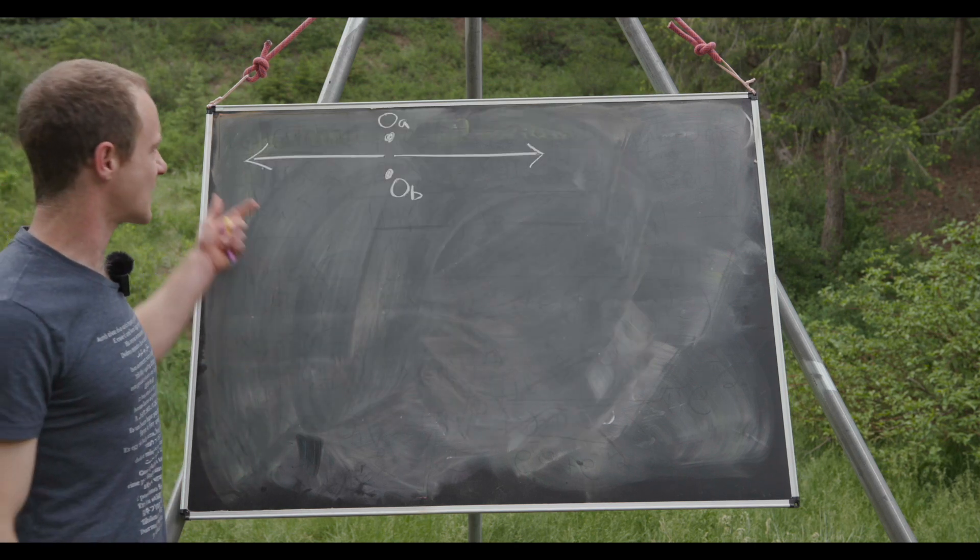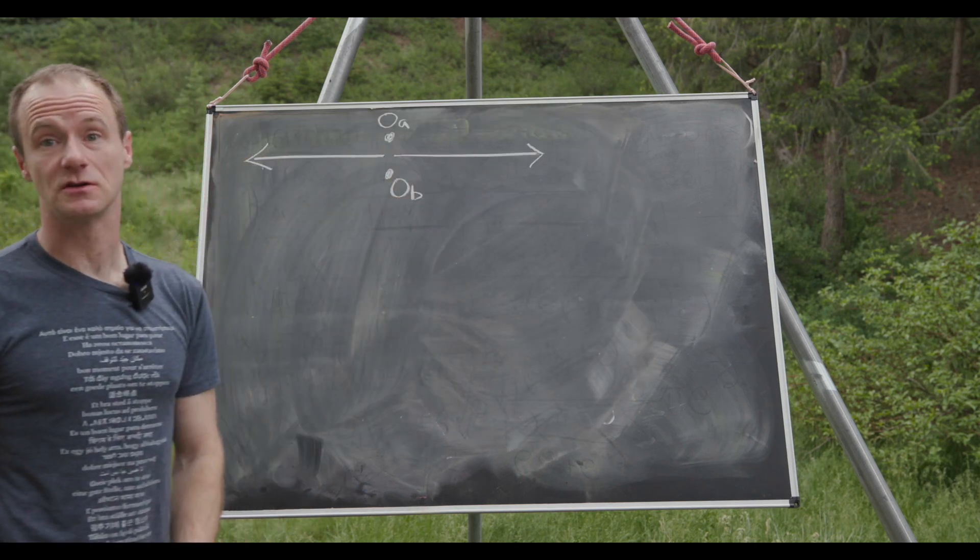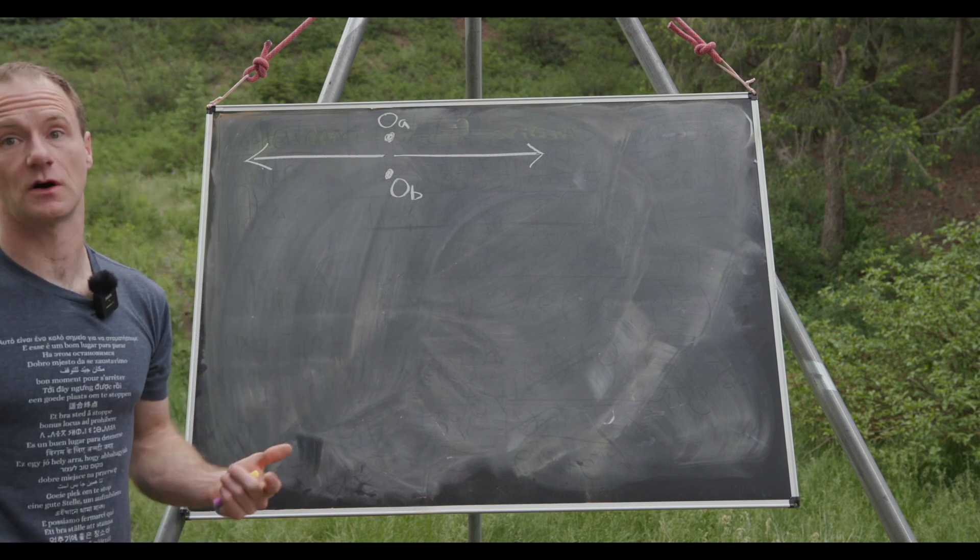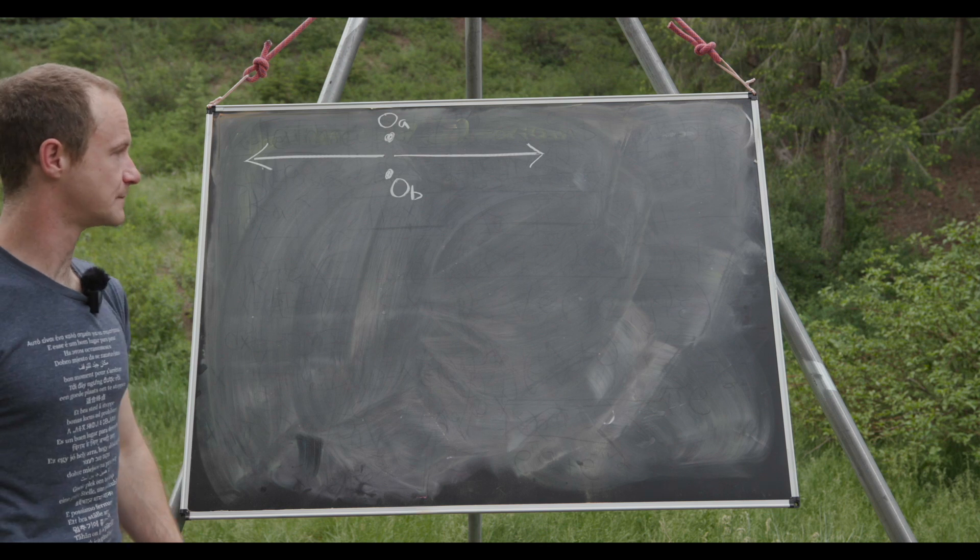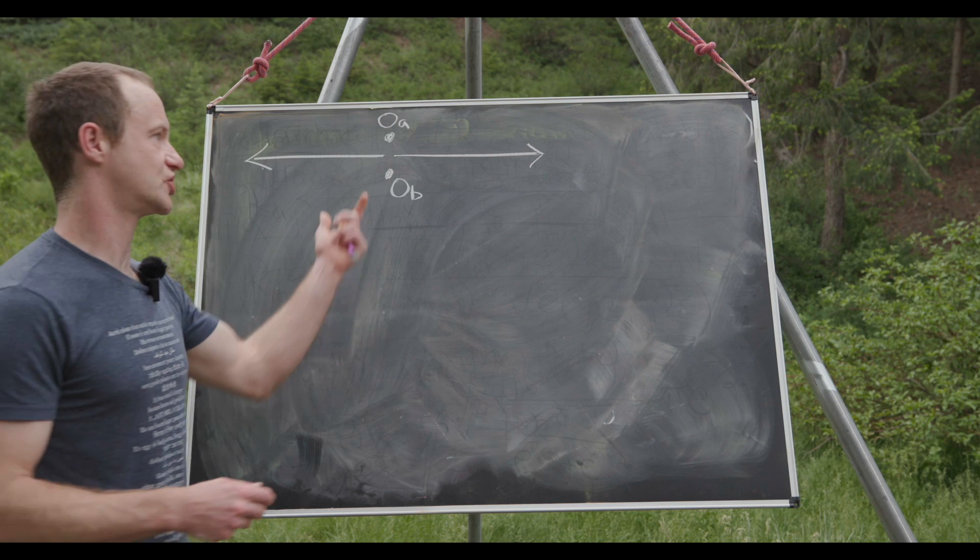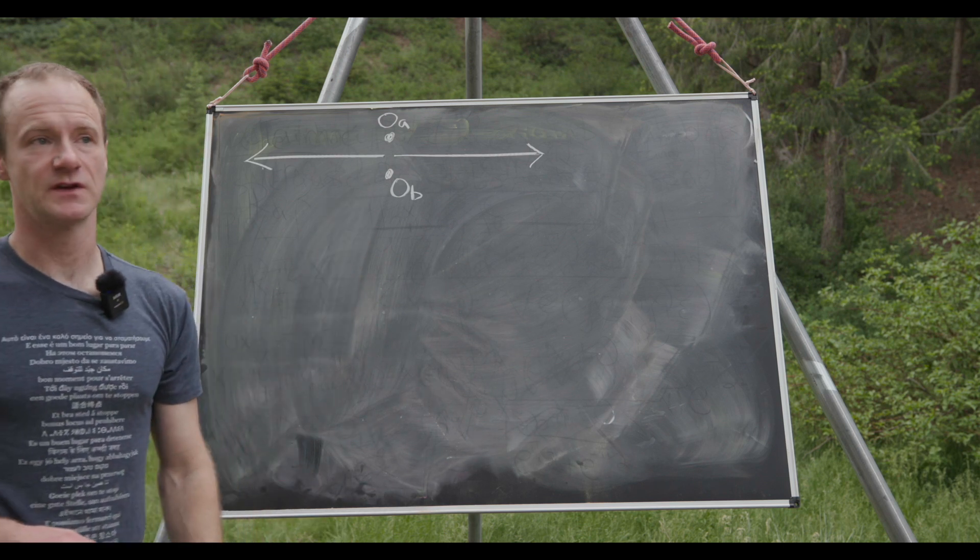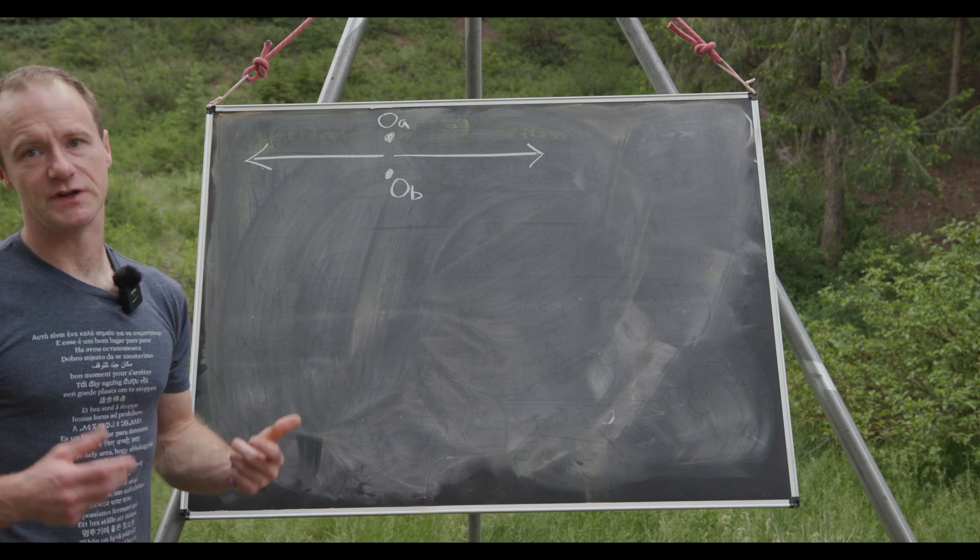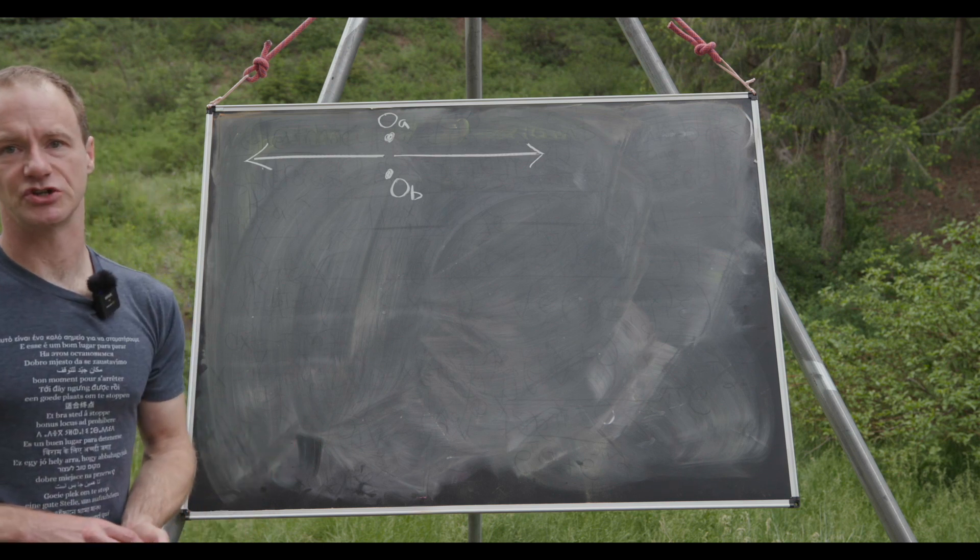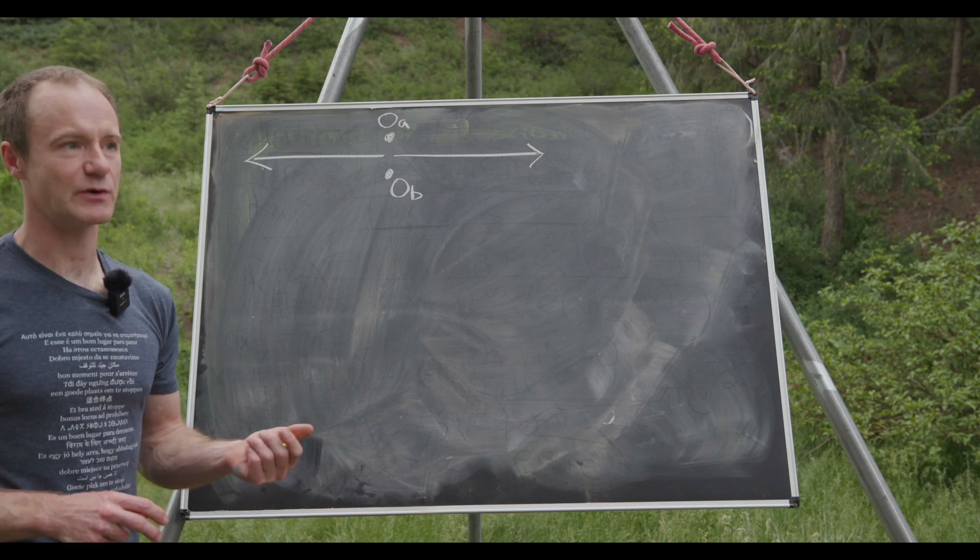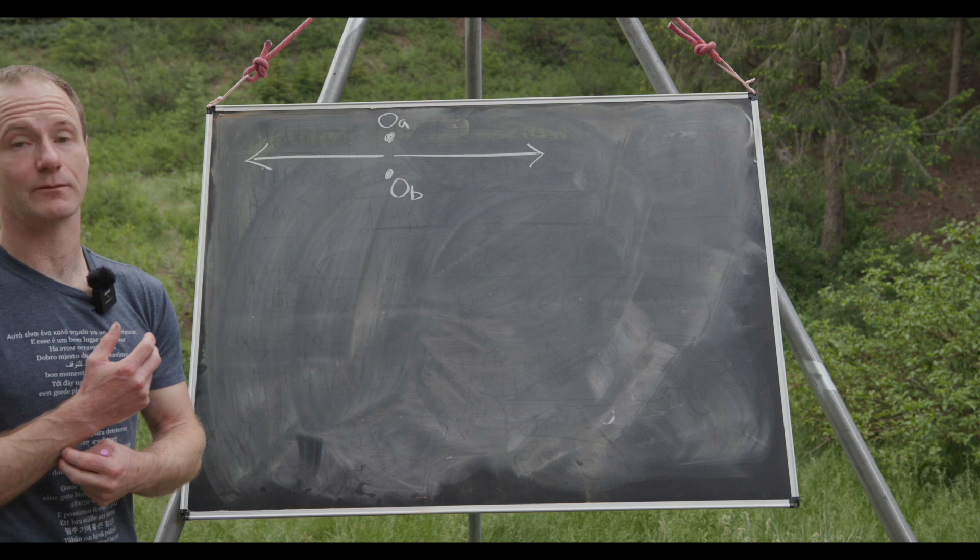So after gluing everything together we've got something that looks like a single line except something weird is happening at the origin. We've got two origins. That's why it's called the line with two origins. Now what we'd really like for our purposes here, which is to show that this is not Hausdorff, is to see what happens to neighborhoods or open sets containing each of these origins. And maybe the best way to look at that is to see what happens as you do the gluing process.